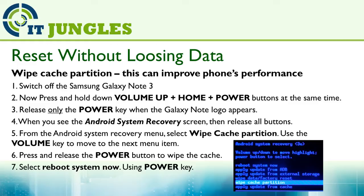First, switch off your Samsung Galaxy Note 3. Then press and hold down the volume up, plus home, plus power buttons all at the same time. Release only the power key when you see the Galaxy Note appear. When you see the Android system recovery screen, then release all buttons. From the Android system recovery menu, select Wipe Cache Partition. Use the volume key to move to the next menu item. Press and release the power button to wipe the cache. Select Reboot System Now by using the power key.